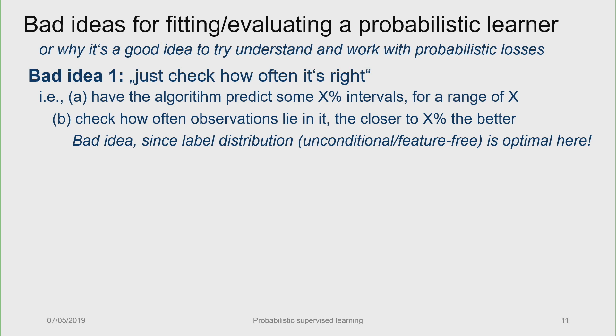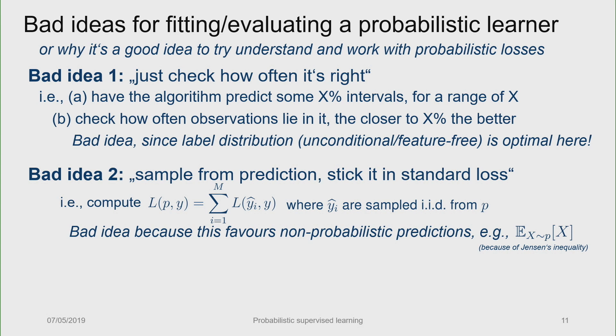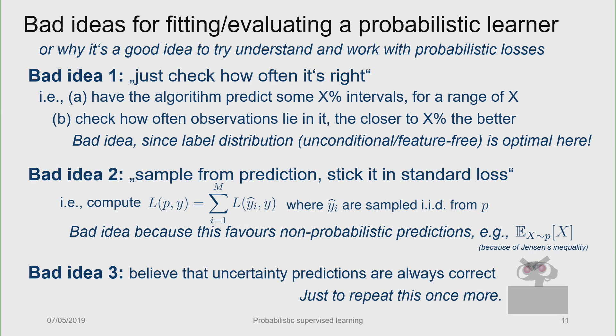Second bad idea, well, you're predicting a distribution, so let's just sample from it and stick it in a point prediction loss. Just compute the mean squared error average over samples from the distribution. Maybe it's a sample from the predictive posterior, you stick it in the... oh, and it should be an average, but this is also bad, so no matter how you scale it. So this is also a bad idea, but also for a very subtle reason, and the reason is Jensen's inequality. Because this kind of evaluation favors point prediction, right? If you measure prediction this way, then predicting the mean of the sample will always be better than averaging over because of convexity of the loss, right? Jensen's inequality. Look it up, but it's a bad idea.